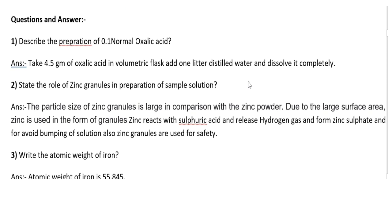Question: Describe the preparation of 0.1 normal oxalic acid. Answer: Take 4.5 grams of oxalic acid in a volumetric flask, add 1 litre of distilled water, and dissolve it completely. This is the preparation of 0.1 normal oxalic acid.